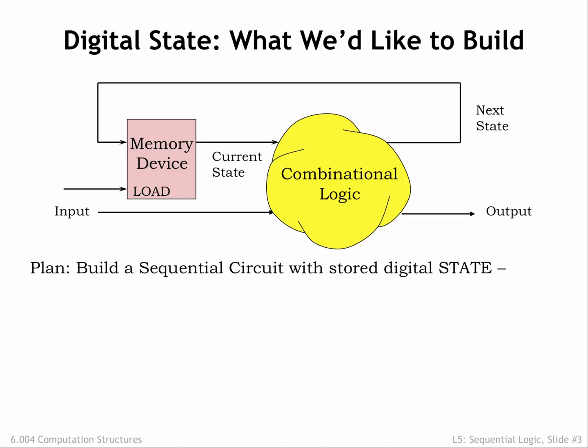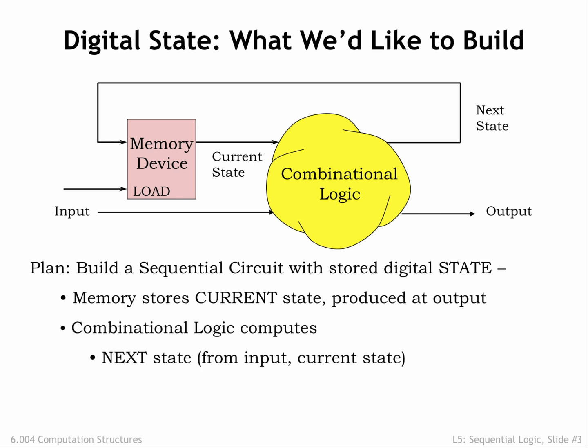We'll introduce a new abstraction of a memory component that will store the current state of the digital system we want to build. The memory component stores one or more bits that encode the current state of the system. These bits are available as digital values on the memory component's outputs, shown here as the wire marked current state. The current state, along with the current input values, are the inputs to a block of combinational logic that produces two sets of outputs.